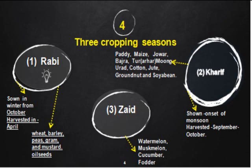Important Kharif-producing regions include Assam, West Bengal, coastal Odisha, Andhra Pradesh, Tamil Nadu, Kerala, and Maharashtra — because rice requires a lot of water and the coastal regions provide that. In recent years paddy has become a very important crop in Punjab and Haryana as well.